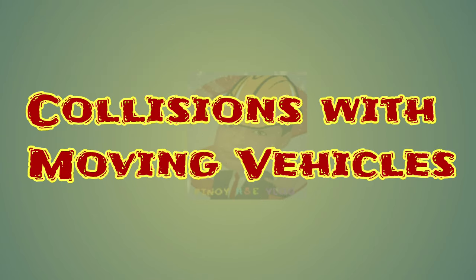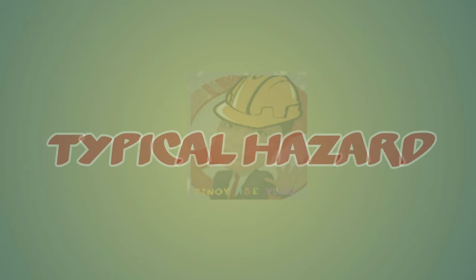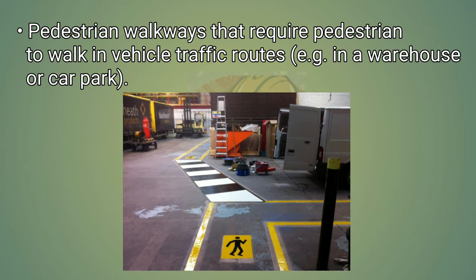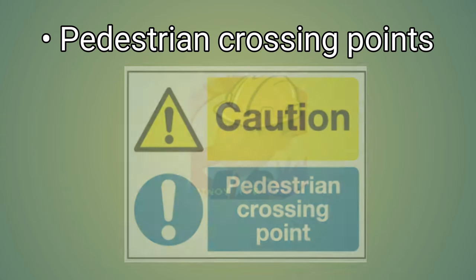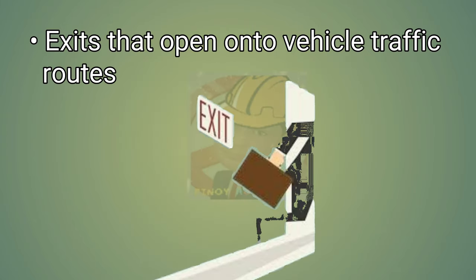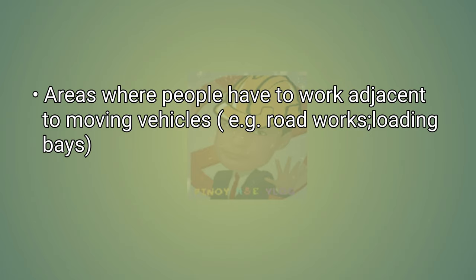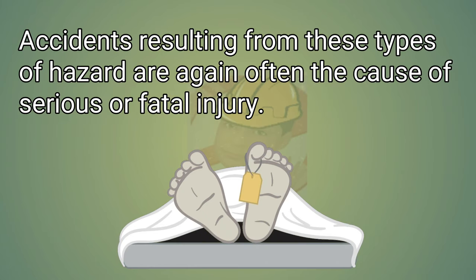Collision with moving vehicles. Typical hazards: pedestrian walkways that require pedestrians to walk in vehicle traffic routes, for example in a warehouse or car park. Pedestrian crossing points. Exits that open onto vehicle traffic routes. Areas where people have to work adjacent to moving vehicles, for example road works, loading bays. Accidents resulting from these types of hazard are again often the cause of serious or fatal injury.